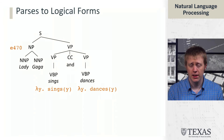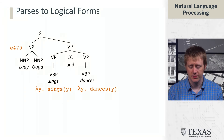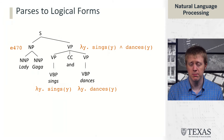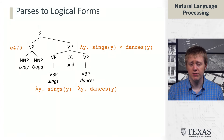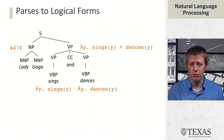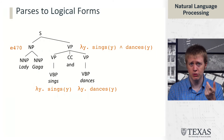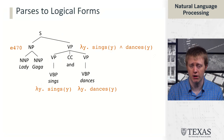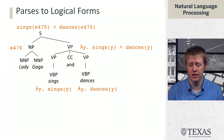Here's a slightly more complicated example: 'Lady Gaga sings and dances.' The new piece is that to form the representation of this VP over 'sings and dances,' we have to combine these two individual predicates. What happens here is a kind of higher-order function application — to combine these things with 'and,' we have a function that takes two functions, lambda y. sings(y) and lambda y. dances(y), and combines them, unifying their arguments into a single lambda y. sings(y) ∧ dances(y). The second function application step then just plugs in E470 for both things.